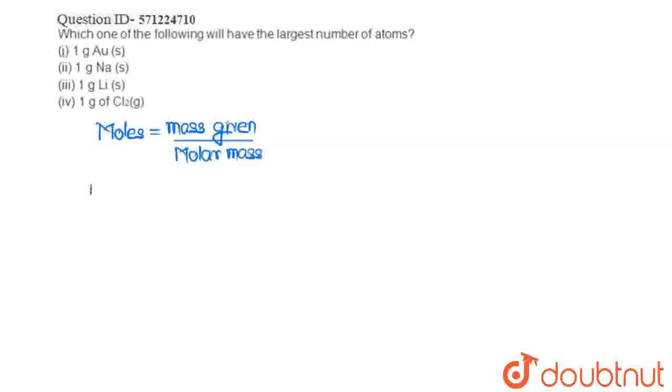Now, for the first option, we have 1 gram Au. Au is which element? Au is gold. So, for this, if we calculate the moles,